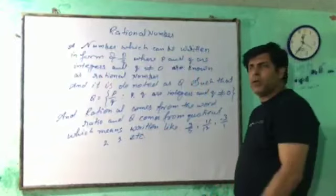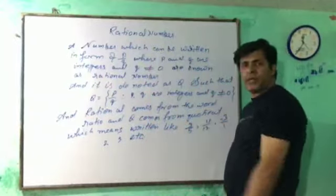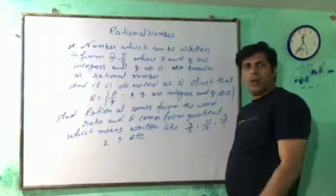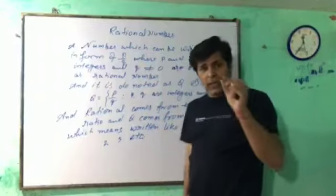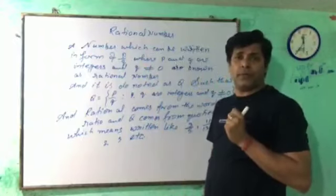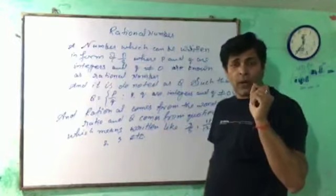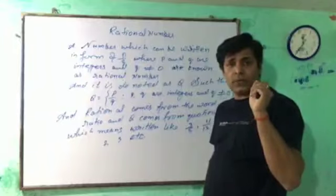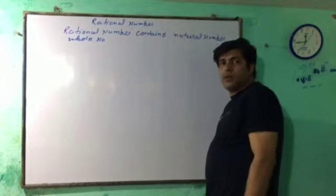Now you can see here the rational number definition on screen. I repeat it: a number which can be written in form of P upon Q, where P and Q are integers and Q is not equal to 0.